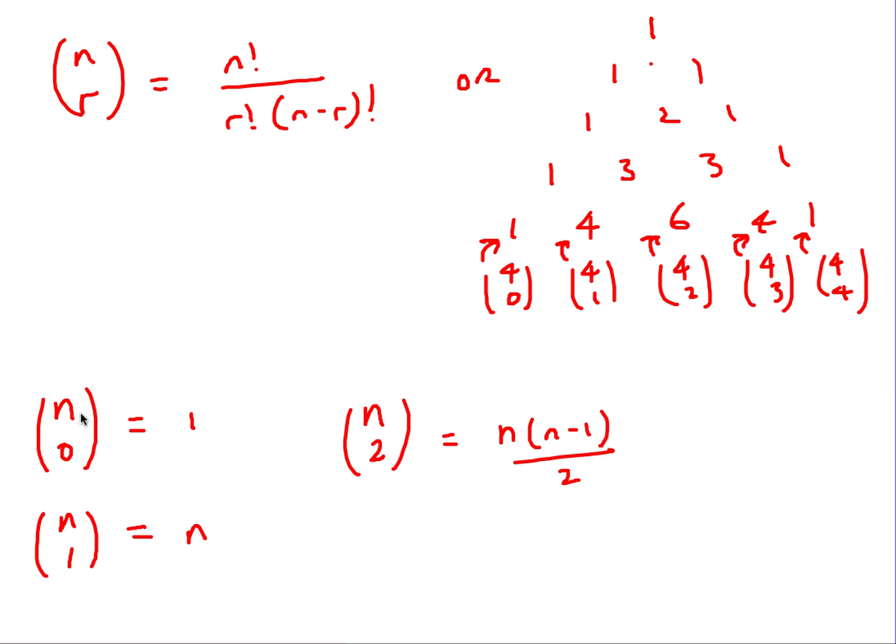I think really as long as you remember these things here, n choose 0 is 1. It doesn't matter what value of n here, 10 choose 0 is 1, 15 choose 0 is 1. N choose 1 is always n. For example, 15 choose 1 is 15. And n choose 2, it's the only one that's a bit more complicated, is n times n minus 1 over 2. As long as you remember those, I think you're pretty much okay, rather than this formula.